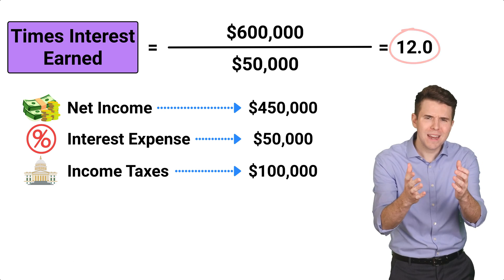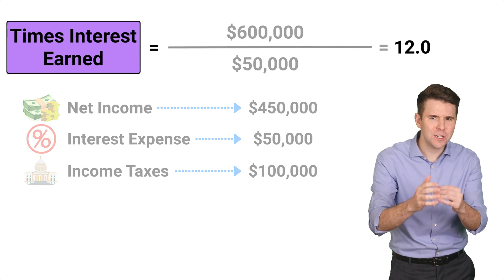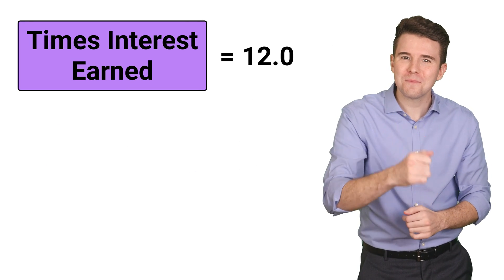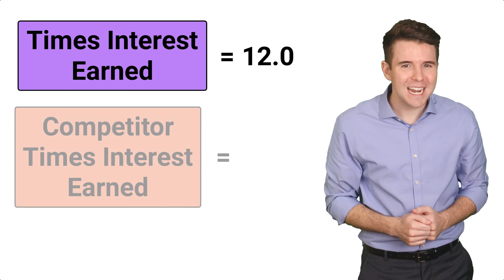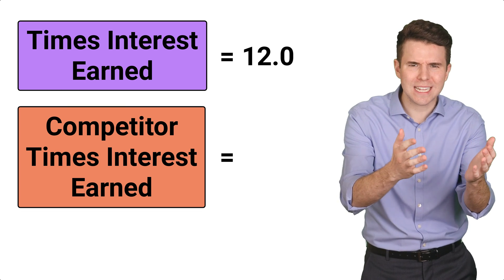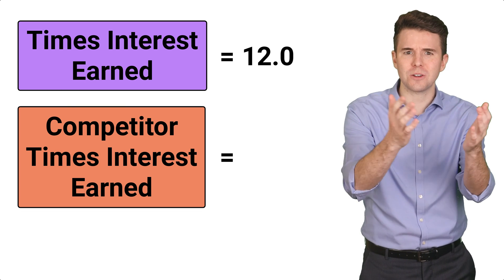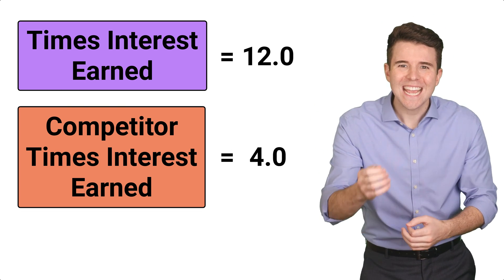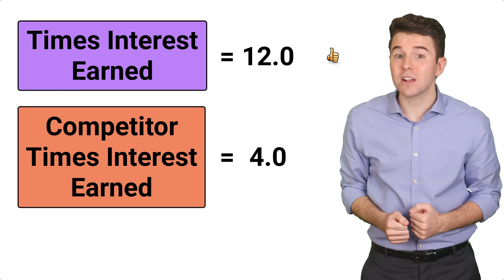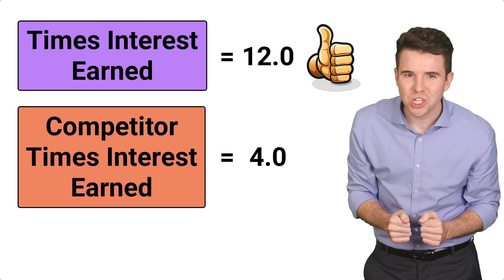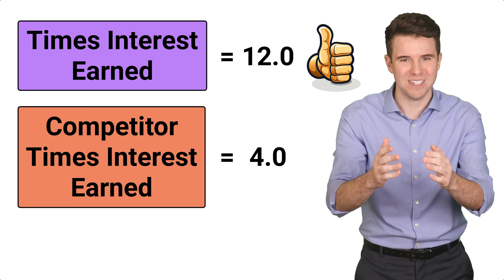But how do we gauge if 12 is a good number? Well, if we look at a competitor and they only have a Times Interest Earned ratio of 4, it suggests that our company is in a better position to cover its interest expense.